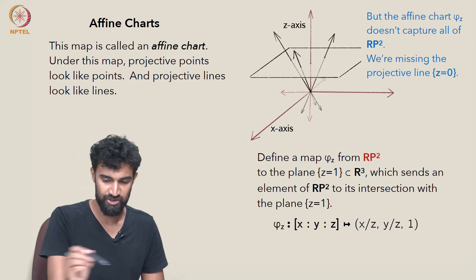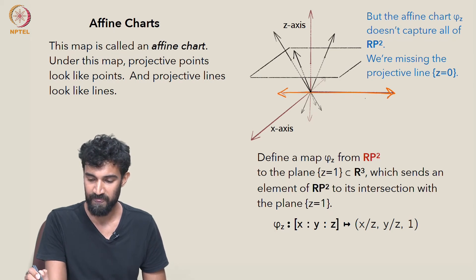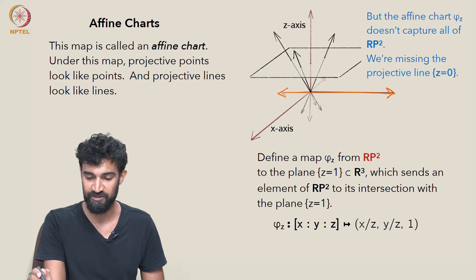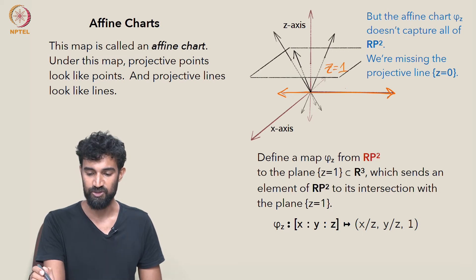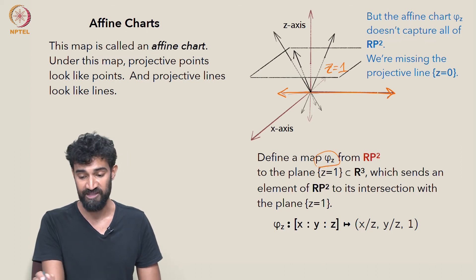So for example, take the y-axis, that line. This line is not going to intersect the plane z equals 1. So φ_z is not going to be defined on that line or any other line sitting in z equals 0.